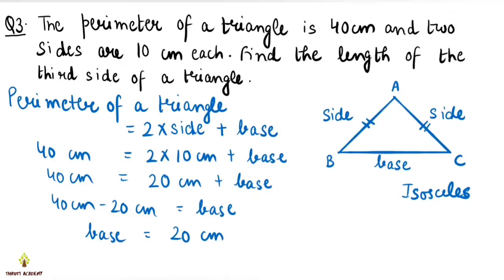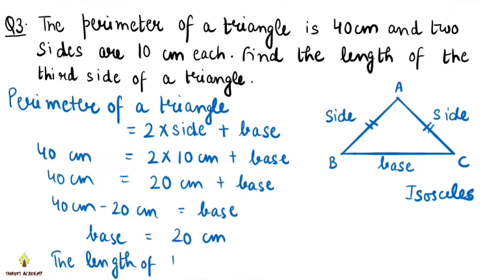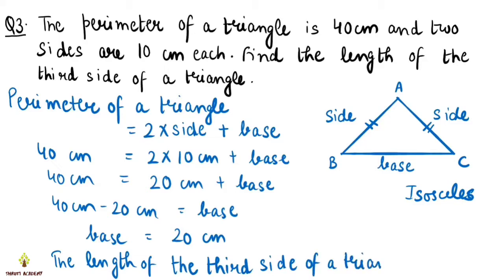Therefore, the length of the third side of the triangle is 20 cm.